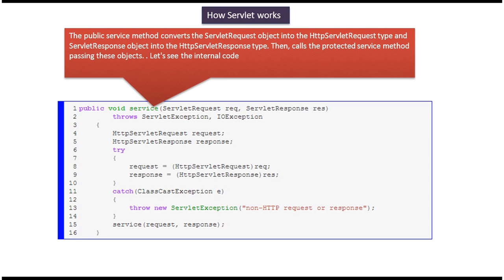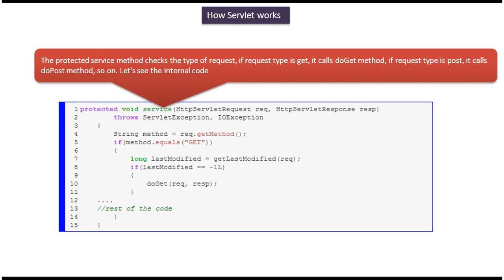There are two service methods: one is the public service method and the other is the protected service method. The public service method receives a ServletRequest object and ServletResponse object from the container, converts them to HttpServletRequest and HttpServletResponse objects, then calls the protected service method by passing those HttpServletRequest and HttpServletResponse objects. This is the internal code of the public service method.